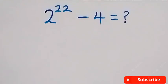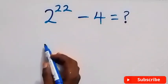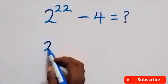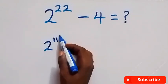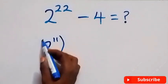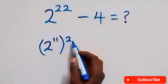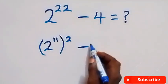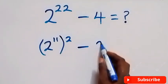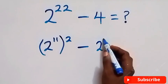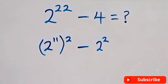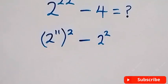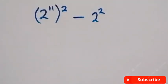Hello, you are welcome here. Let's solve this nice exponent problem. From here, you can write this as 2 raised to power 11, then raised to power 2, because this 2 will multiply 11 to still be 22. Then minus here, you can write this as 2 raised to power 2, which is the same thing as 4.